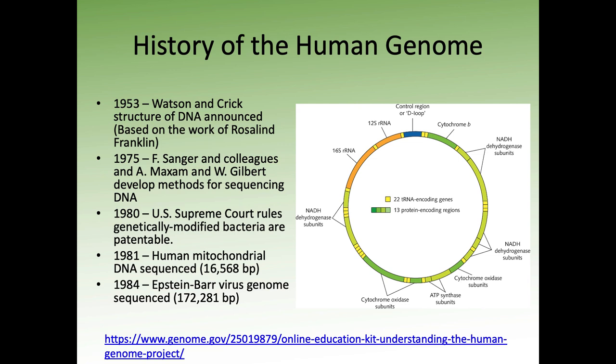In 1981, we had the first sequence of the human mitochondrial genome. The mitochondrial genome is a lot smaller than the human genome — only about 16,500 base pairs long. It's also haploid, so you don't have to worry about variation within an organism. In 1984, we had our first viral genome sequence: the Epstein-Barr virus, about 172,000 base pairs long.